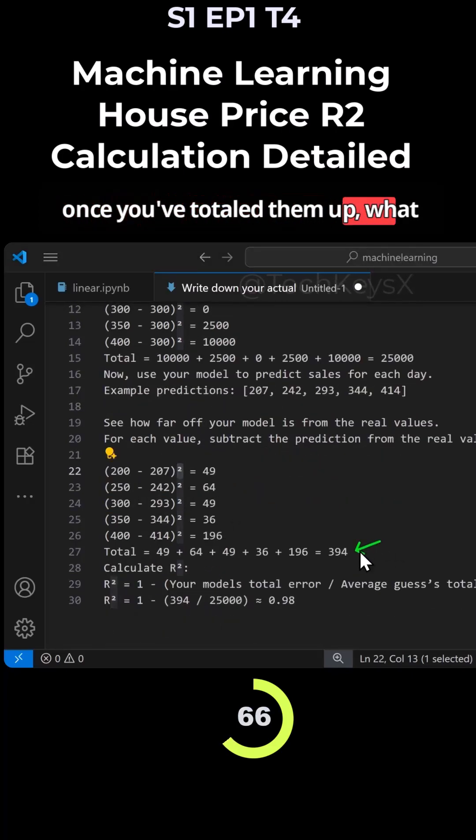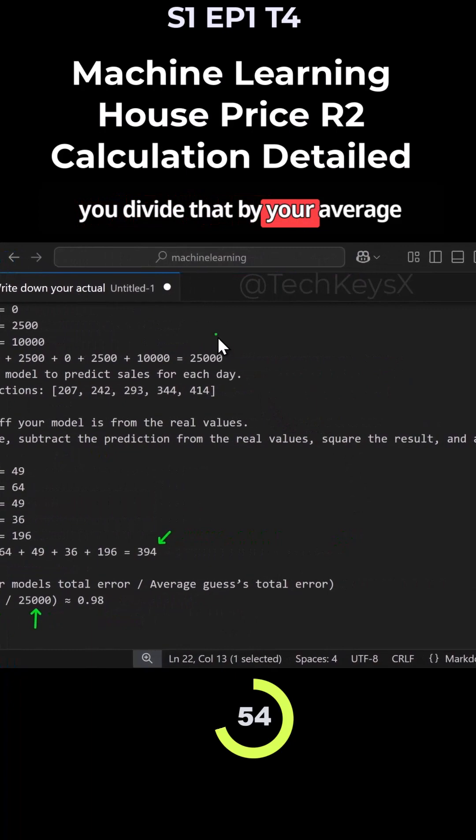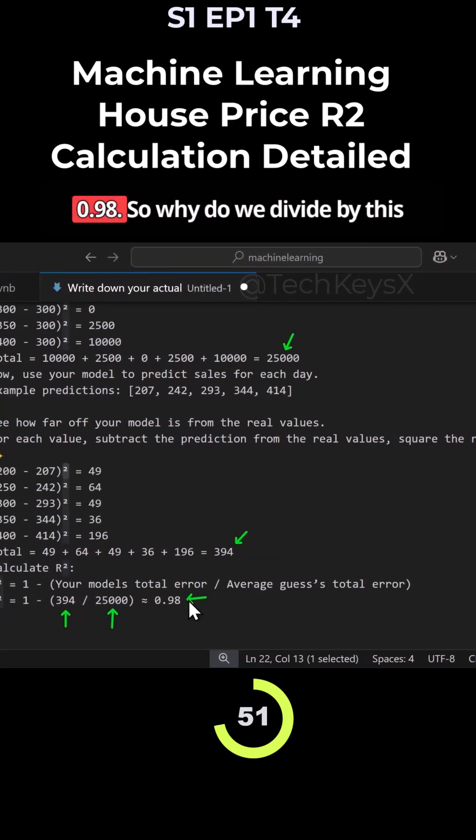And once you've totaled them up, what you do is you divide this total of the differences between the actual house price versus the predicted, sum that up over here, and then you divide that by your average guess, and that gives you a score of 0.98.